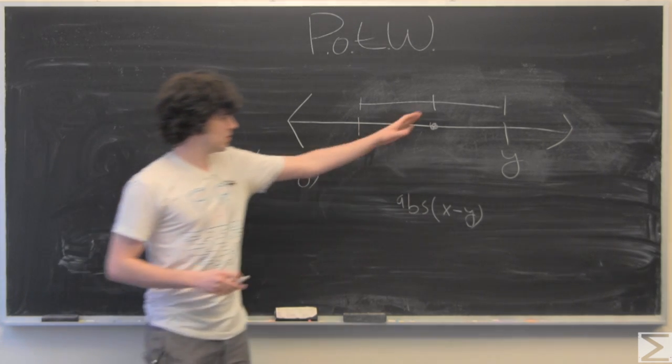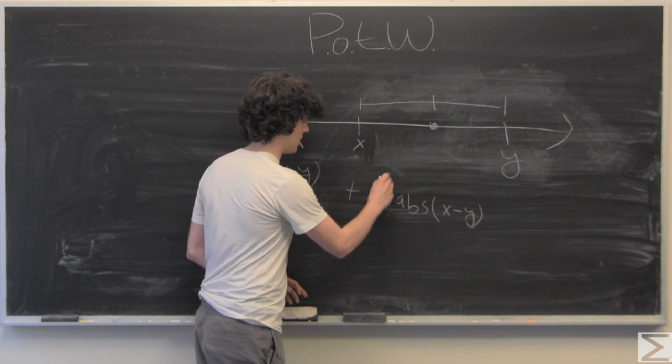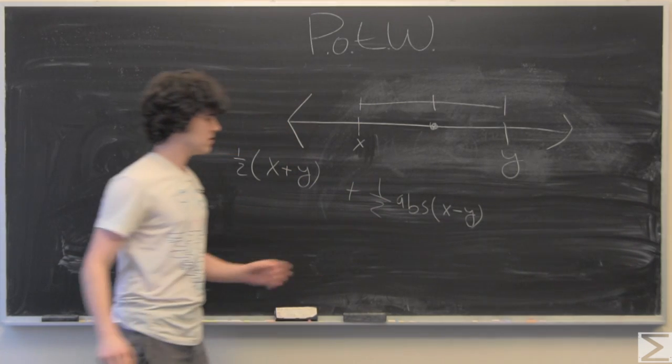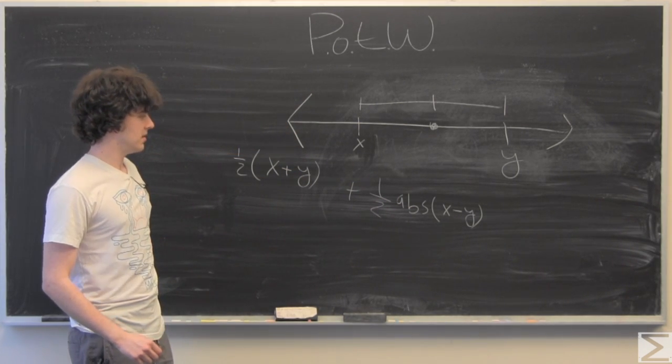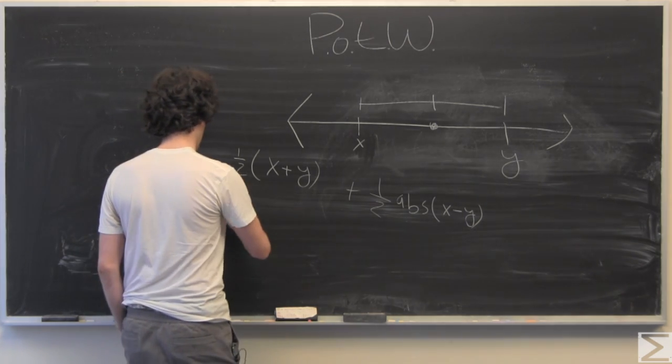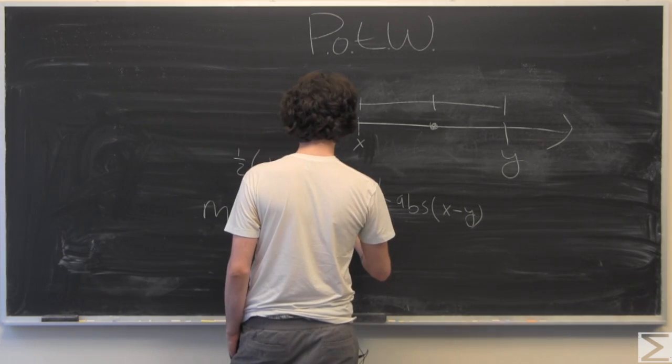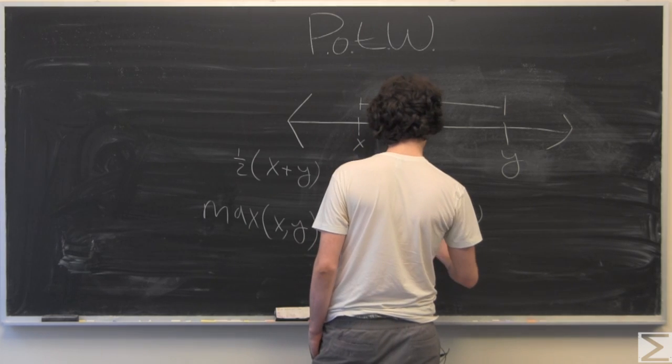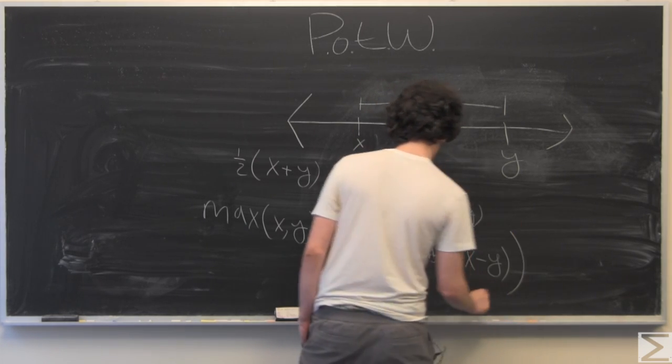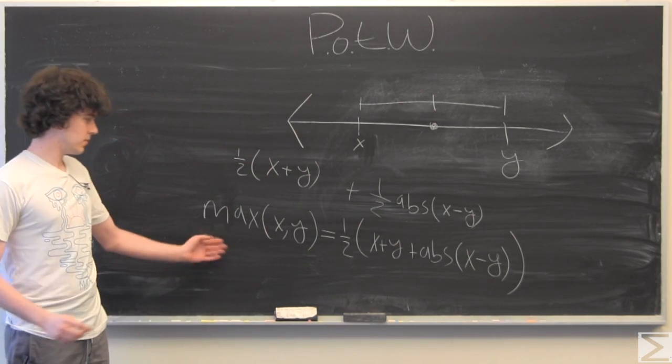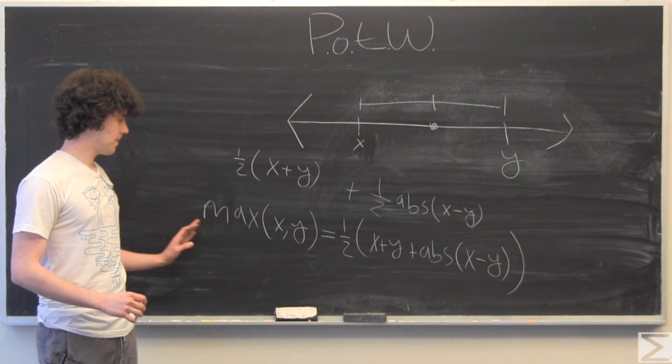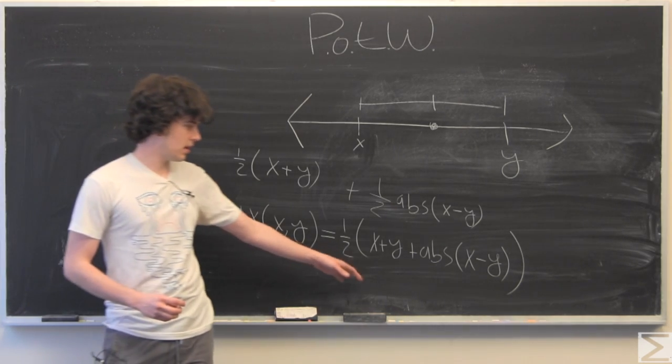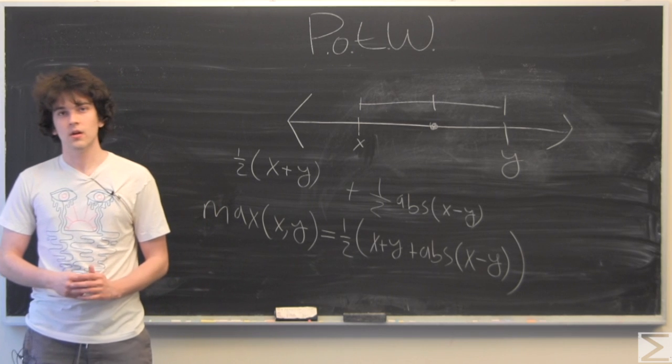And to that we're adding half of the absolute value. We can take out the one half and here we have the max value function using only the absolute value function.